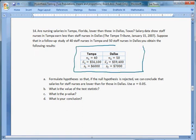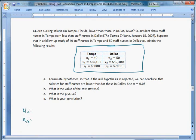They want to formulate hypotheses so that if the null hypothesis is rejected, we conclude that salaries for staff nurses are lower than for those in Dallas. We'll call these one and two, this should be staff nurses in Tampa. We want to conclude that staff nurses in Tampa are lower than Dallas, which means the mean in Tampa minus the mean in Dallas is going to be less than zero. Work this problem on your own, figure out why that's true, why these are the hypotheses. Why are these the hypotheses? That's a little exercise for you.